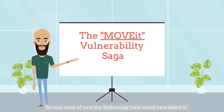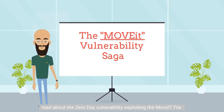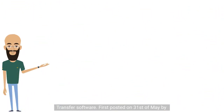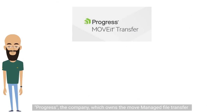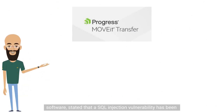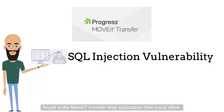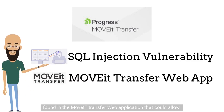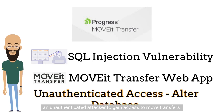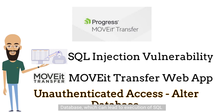By now, most of us in the technology field would have heard or read about the zero-day vulnerability exploiting the MOVEit file transfer software. First posted on 31st of May by Progress, the company which owns the MOVEit managed file transfer software stated that a SQL injection vulnerability has been found in the MOVEit transfer web application that could allow an unauthenticated attacker to gain access to MOVEit transfer's database, which can lead to execution of SQL statements that can alter or delete database elements.